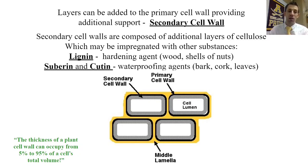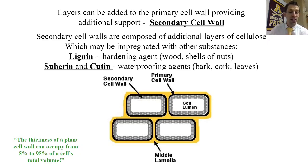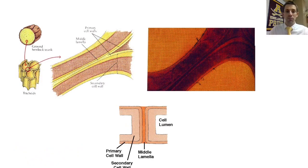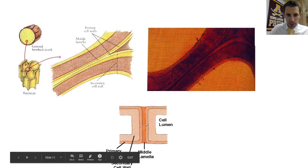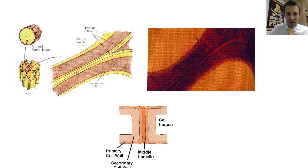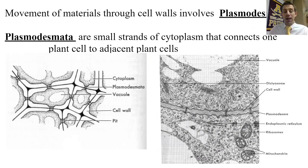Secondary cell walls can also contain suberin and cutin, which are waterproofing agents found on the bark of trees or on the tops of leaves to prevent water from building up so the leaves can continue to do photosynthesis. Depending on the type, cell walls can take up anywhere from 5 to 95 percent of a cell's total volume. Images of plant cells show the primary and secondary cell walls, with the middle lamella in between. The term 'lumen' refers to the interior of the cell.